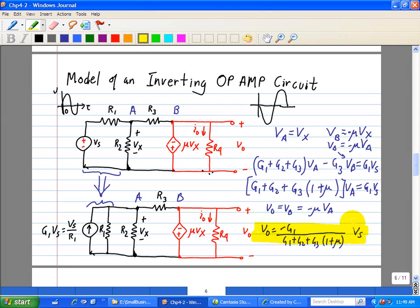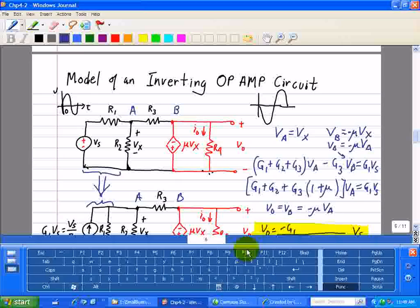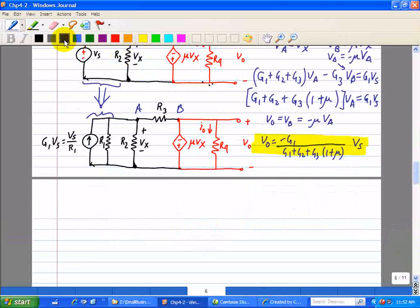So note again, this is our input Vs. This is our output V0, and this is a constant with a minus sign, which makes that the output is an inverted version of the input. Also, I need to add a mu in our numerator here, because V0 is mu times Va with a minus sign. So, let's place a mu in the numerator.